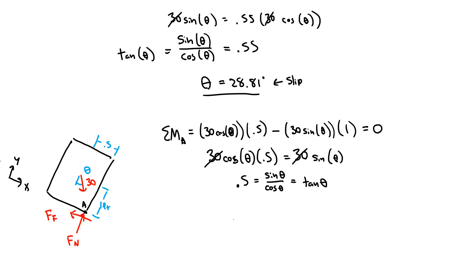I can figure out that theta, in this case, is going to be 26.57 degrees, and this is for tipping. So this answers my question. I'm going to hit 26.57 degrees before I hit 28.81 degrees. So tipping occurs first, and the angle at which that will occur is 26.57 degrees.